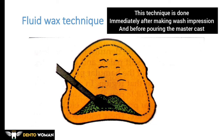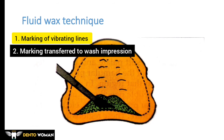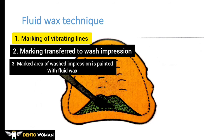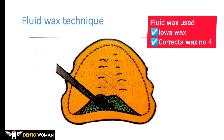The anterior and posterior vibrating lines are marked as described in the conventional technique, immediately after making the wash impression with zinc oxide eugenol. The markings are transferred to the secondary or wash impression by reseating the impression in the mouth. The wash impression is then painted with fluid wax — commonly used waxes are Iowa wax or Korecta wax No. 4. The wax should be painted only within the margins of the palatal seal marked on the impression, as shown by the green shaded area indicating the post-dam area.